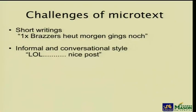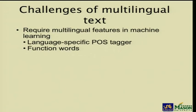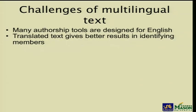We also get informal and conversational-style messages, like 'lol......Nice post.' Such text is also multilingual, and in machine learning we need features — if it's multilingual text, we require multilingual features like language-specific part-of-speech taggers or language-specific function words. From previous research, we know that many authorship tools are designed for English and work more efficiently with English. From my previous research, I know that if you translate a foreign language text into English, you get higher accuracy when performing authorship attribution on it.